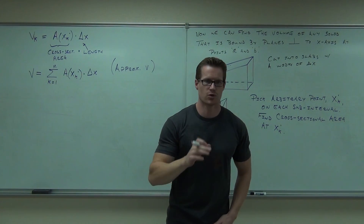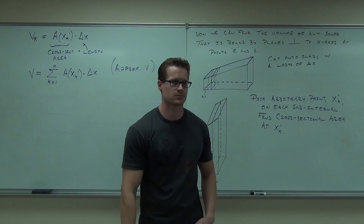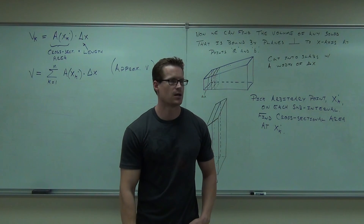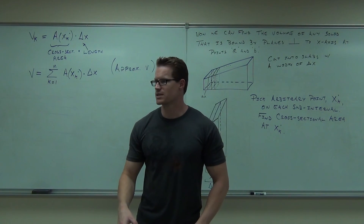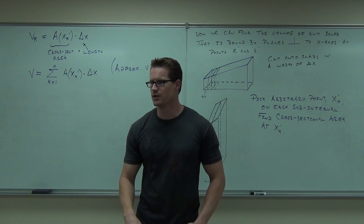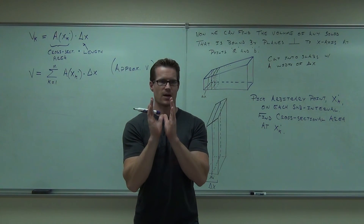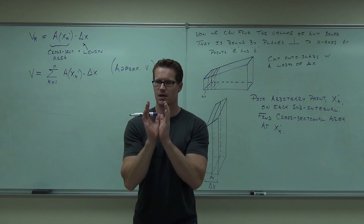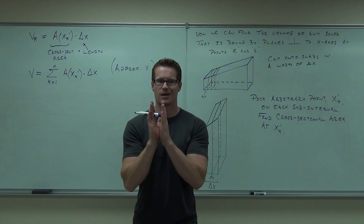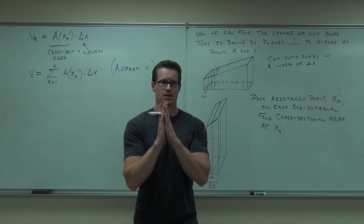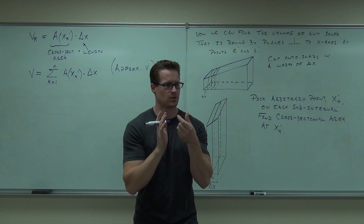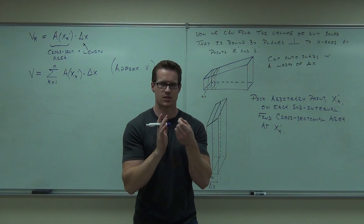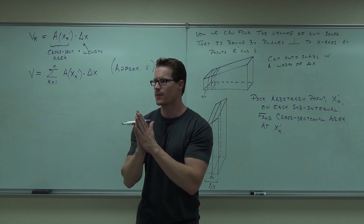Now use your calculus — how do you make it better? Take the limit as n approaches infinity. That's going to say: instead of a finite number of slabs, make an infinite number of slabs. If you pack an infinite number of things into a finite space, delta x moves really close to zero — but it doesn't become zero, because if delta x were zero you'd get a volume of zero. You have to have something there, but it's so small that it approaches the exact value.